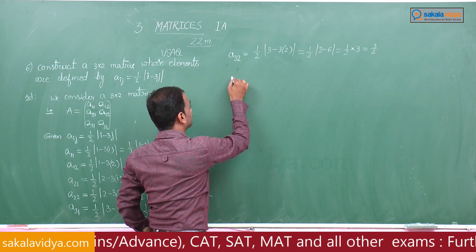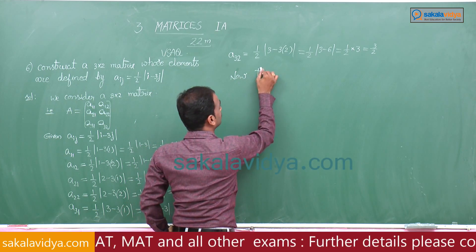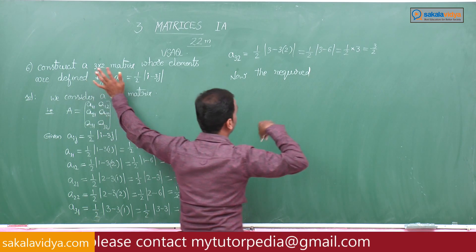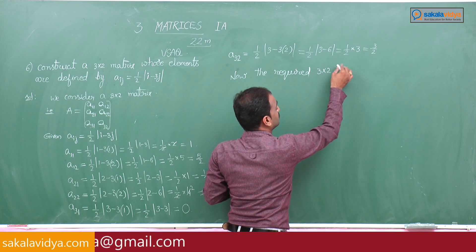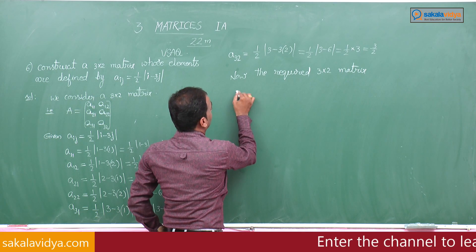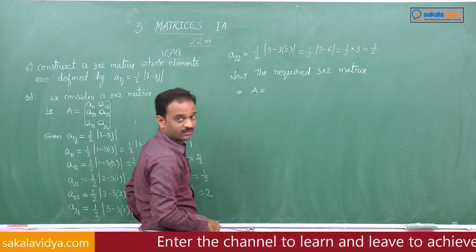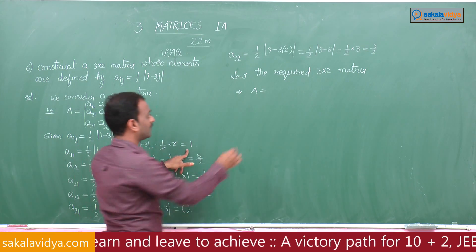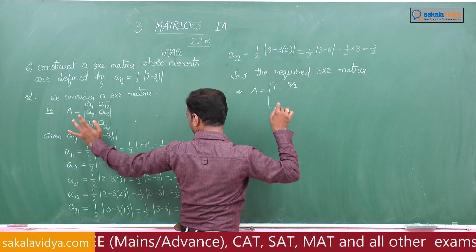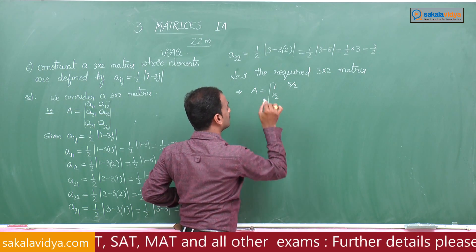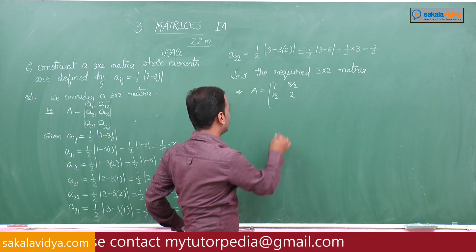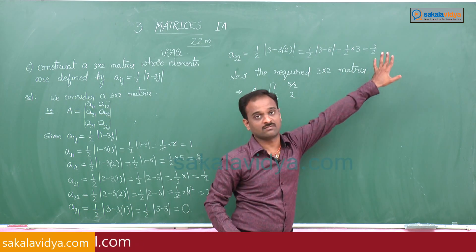Now the required matrix of order 3 cross 2 is: capital A equals with a11 equals 1, a12 equals 5 by 2, a21 equals 1 by 2, a22 equals 2, a31 equals 0, and a32 equals 3 by 2.